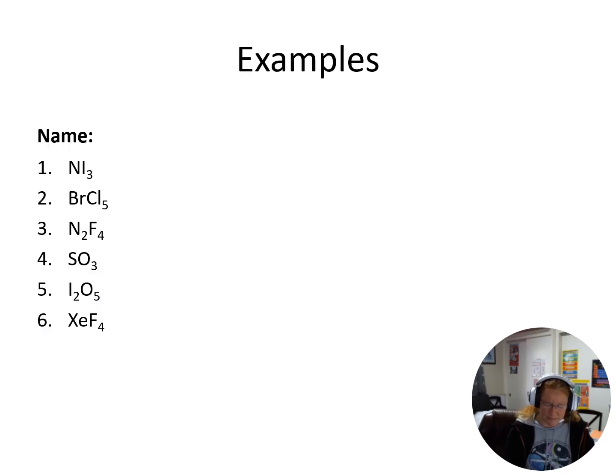So let's try a few examples. I have NI3 - N is nitrogen and I is iodine. So I only have one nitrogen, so I don't need any prefix on there because it's the first element. I'm just going to put nitrogen.